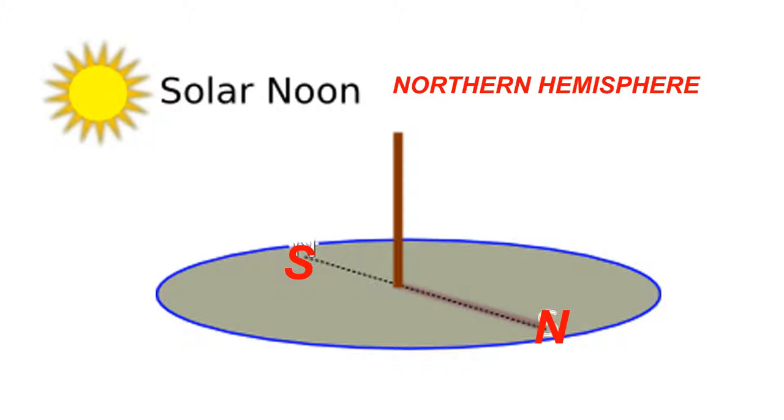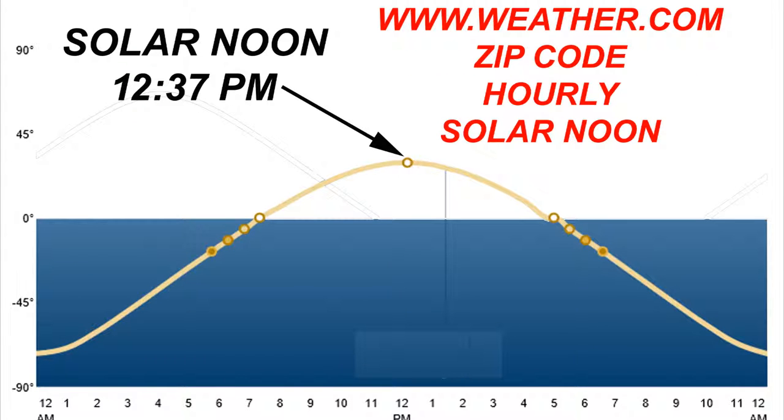The easiest way I know of to properly align your greenhouse is with the sundial method. Install a round stick into the ground and make sure that it is standing vertically level above ground. Then visit the weather channel, www.weather.com, and search for your zip code or city location.